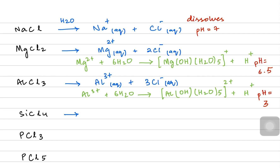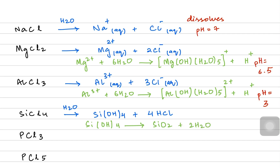When silicon tetrachloride reacts with water, silicon tetrahydroxide is initially formed but it immediately produces white precipitates of silicon dioxide. HCl is also produced, so white fumes of HCl are seen and the solution is acidic because the HCl also dissolves in water. White precipitates of silicon dioxide are formed alongside an acidic solution.